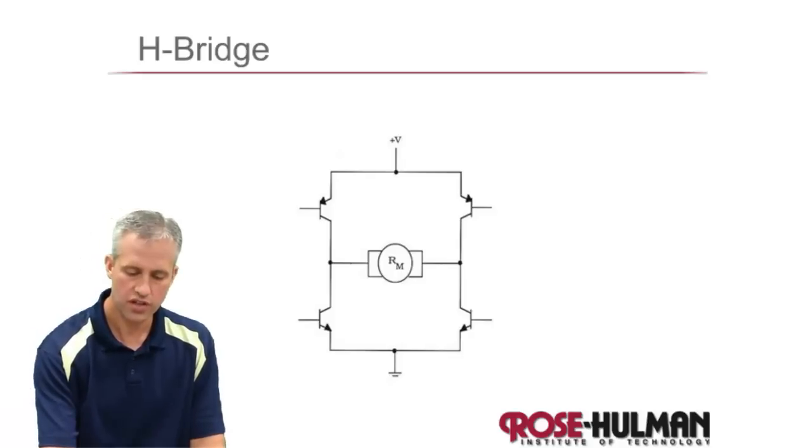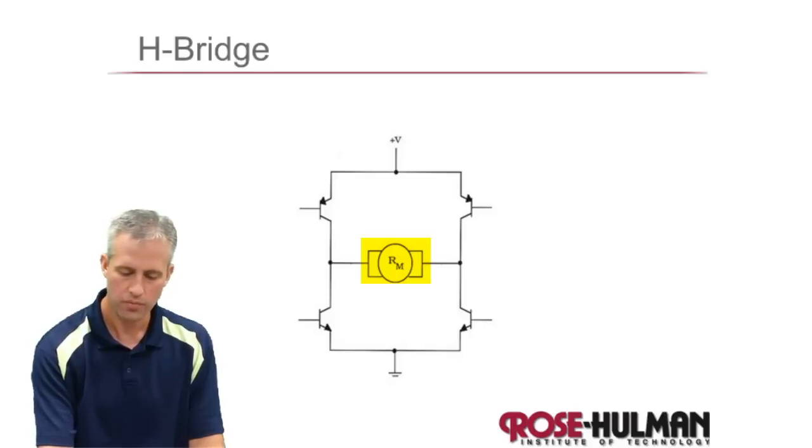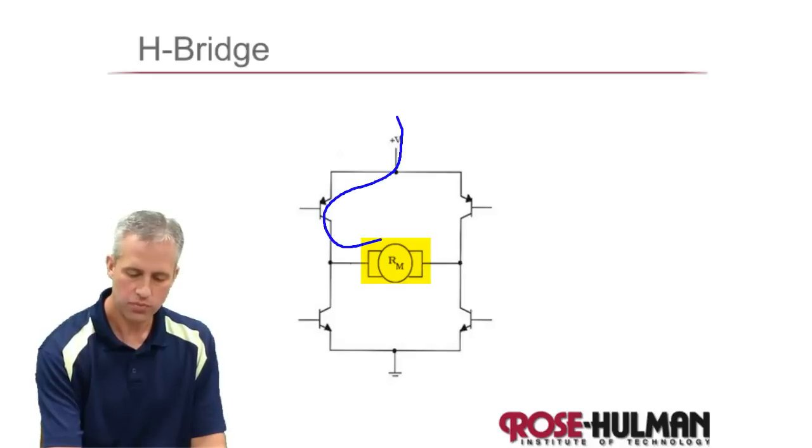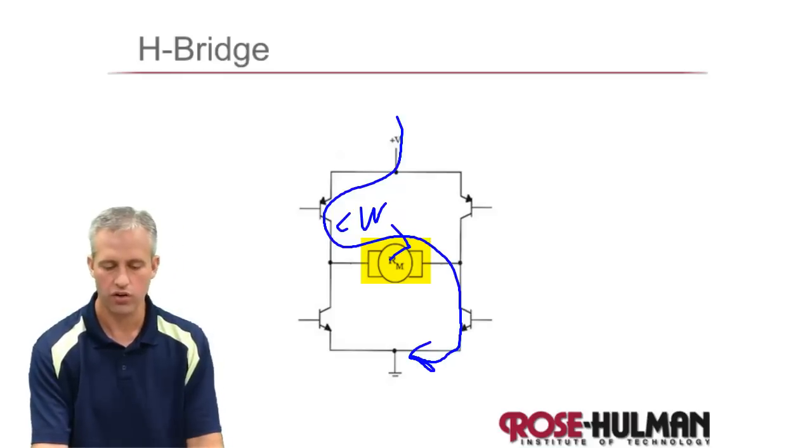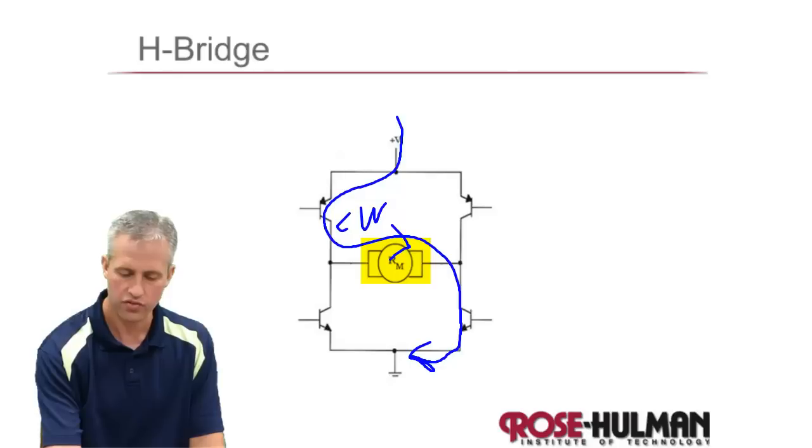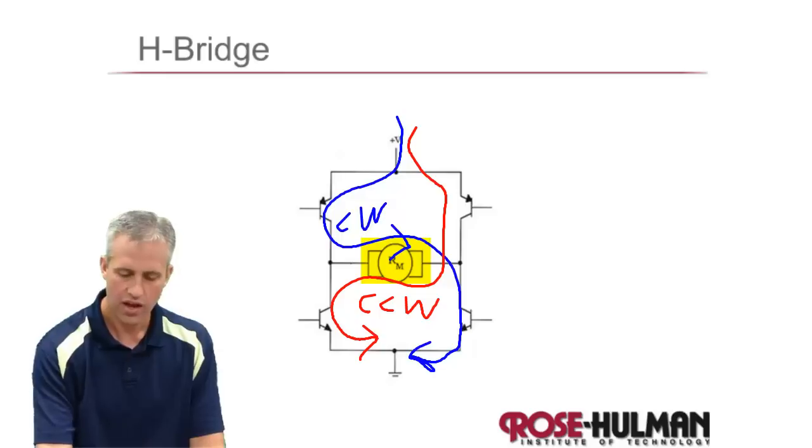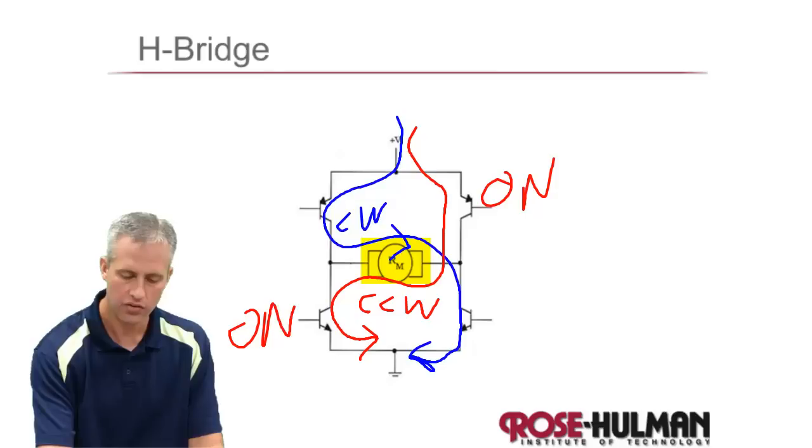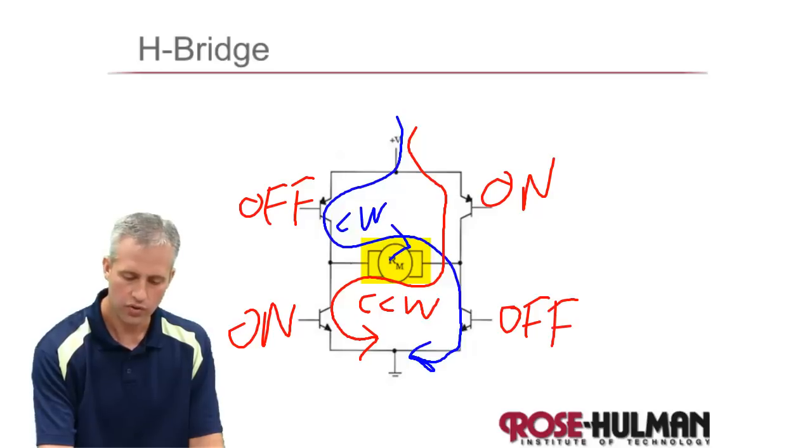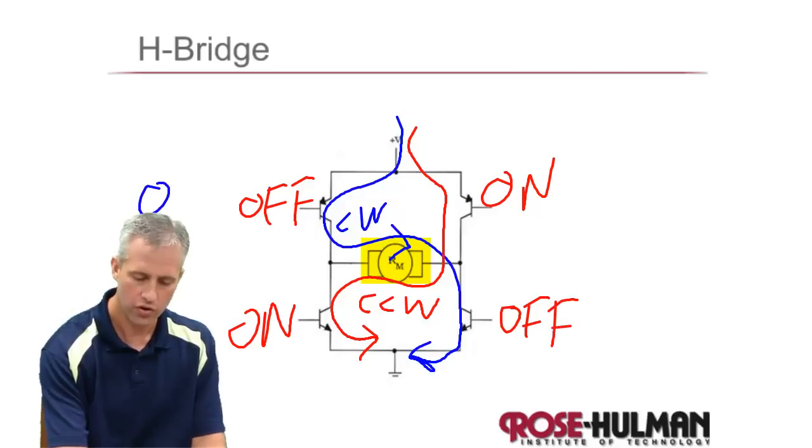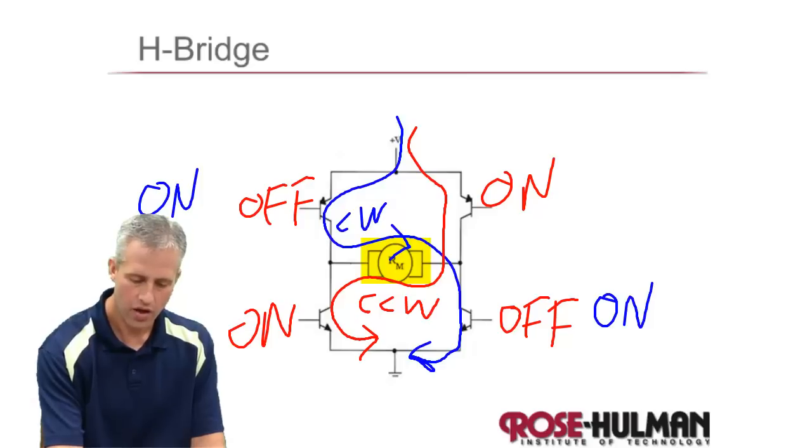An H-bridge controls a motor. The whole idea of an H-bridge is it is a way to drive bi-directional motors. So let's say this motor, you turn it on clockwise by sending current through in this direction. If you wanted to send it counterclockwise, you would send it through in the other direction. So for counterclockwise, you would turn these two guys on, those ones off, and then of course for the other direction, you would have swapped who was on and who was off. So it would be on, on, off, off.